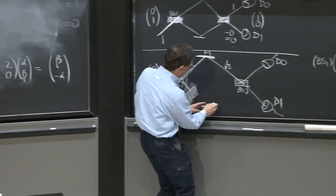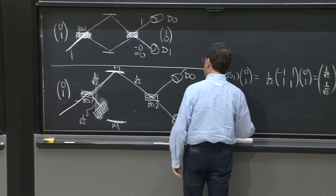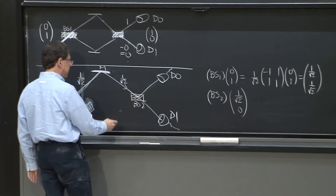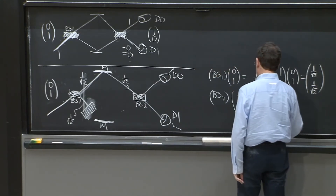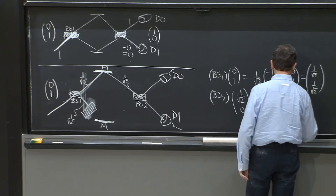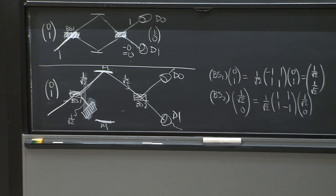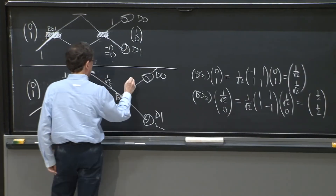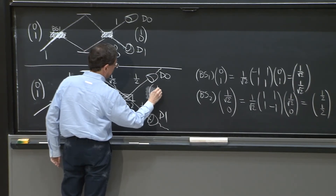To find the output amplitudes, I compute BS2 acting on the vector (1 over square root of 2, 0). BS2 is 1 over square root of 2 times the matrix with entries 1, 1, 1, minus 1, acting on (1 over square root of 2, 0). This time I get 1 half and 1 half — a column vector (1/2, 1/2). We must trust the math: 1 half amplitude at D0 and 1 half amplitude at D1.